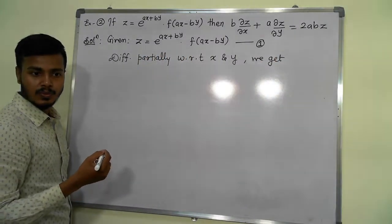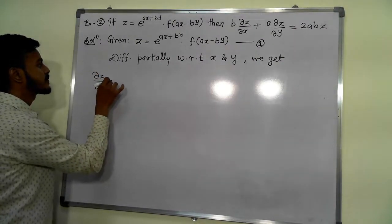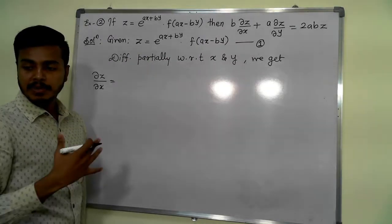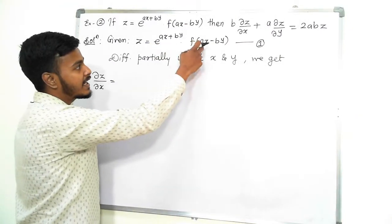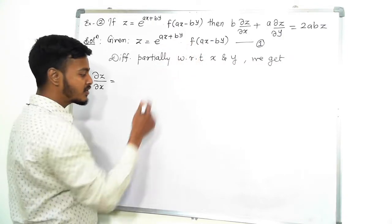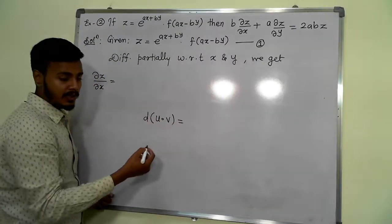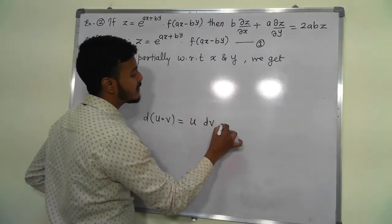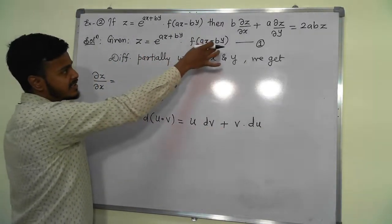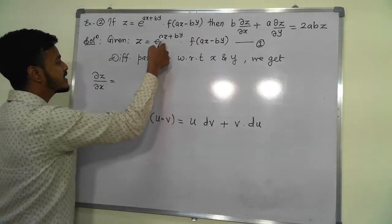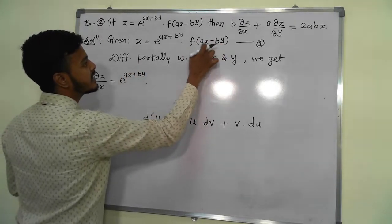First I will differentiate with respect to x. ∂z/∂x is the derivative of z with respect to x keeping y constant. There is a term of x in the first term and x in the second term also, so this is a product of two functions. Let us recollect the product rule: first function times derivative of second, plus second function times derivative of first. Say this function is u and this is v.